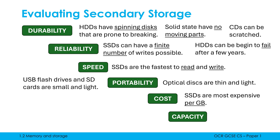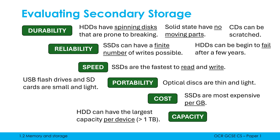Capacity is how much binary data can be stored, measured per device or per unit. Hard drives typically have the largest capacity per device and are the cheapest per gigabyte. Hard drives can have multiple terabytes of storage. SSDs can also have multiple terabytes but normally not as much as hard drives. These are the key points to commit to memory, but part of it is thinking on your feet — considering the scenario and choosing the most suitable storage type using the correct evaluation terms.